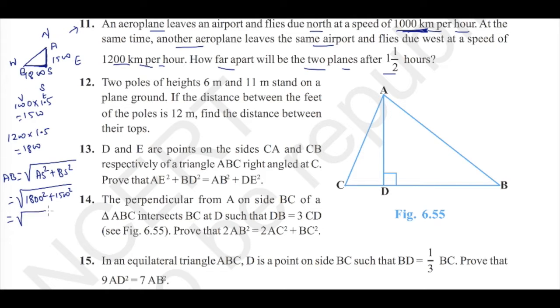We could write this as 18 into 100 square plus, sorry, this is 18 square into 100 square plus 15 square into 100 square. 100 square is common, so we can take that out. 100 into root of 549, because 18 square is 324 and 15 square is 225. 100 root 549 is the answer.